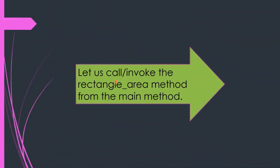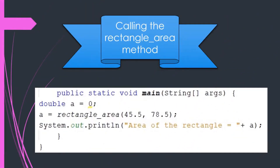Now let us call or invoke the rectangle area method from the main method. This example will clearly show how to invoke a method. In our previous video we studied how to write and declare a static method and its parts. In this video we will be calling the same rectangle area method. Here is the coding that we have to write to call it.